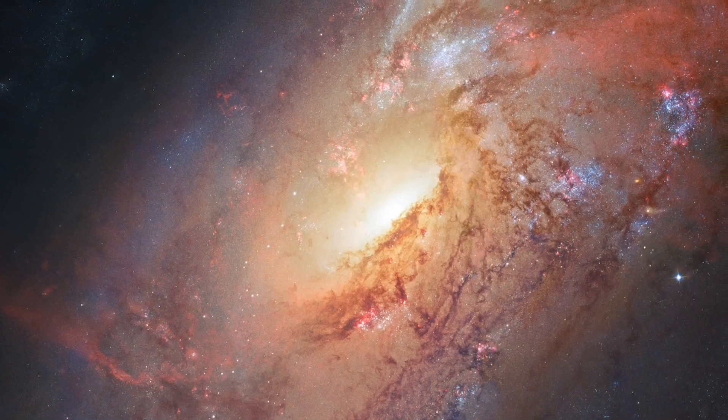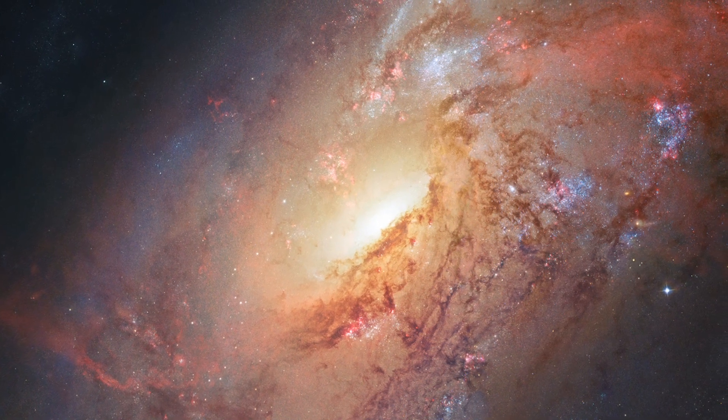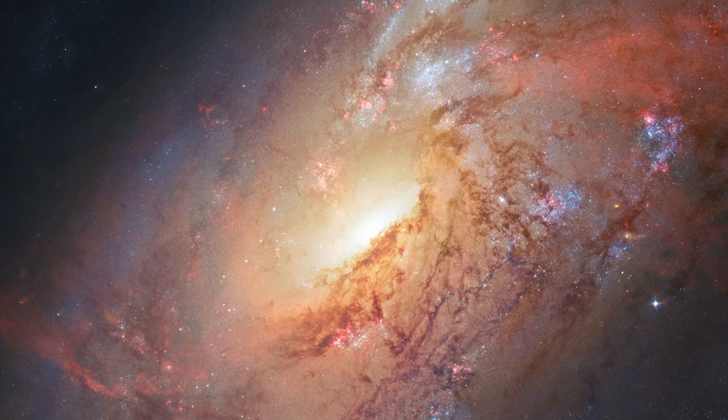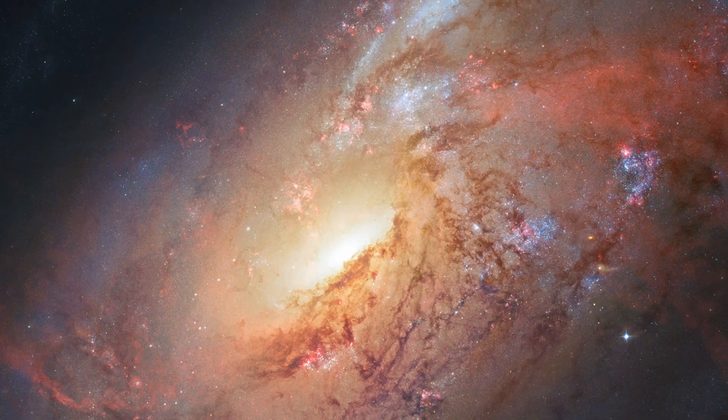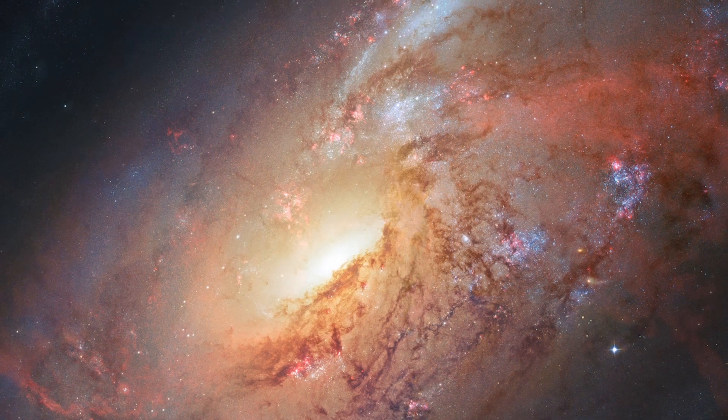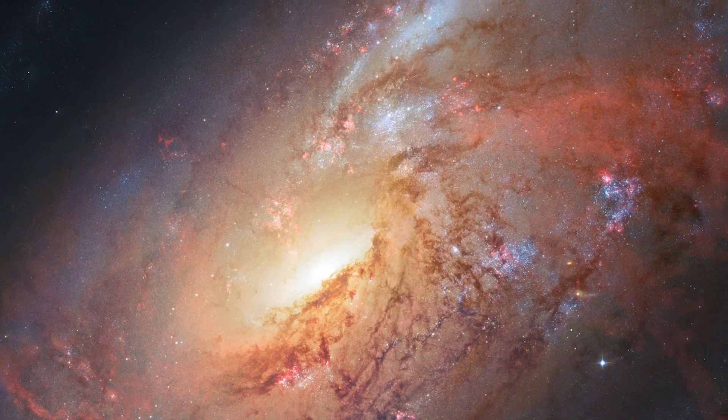Some of the data for this image of Messier 106 were provided by amateur astronomer Robert Gendler. Together with Hubble, these data allow us to visualize the galaxy's chaotic center and mysterious structure better than ever before.